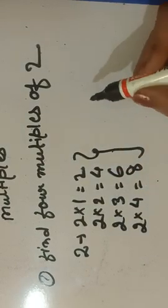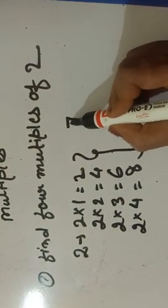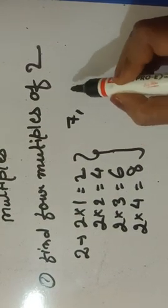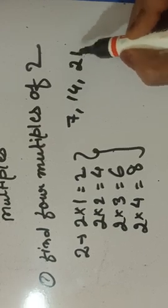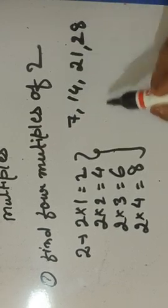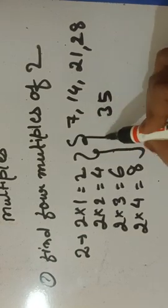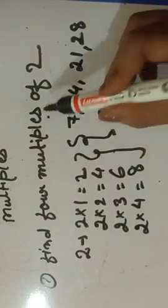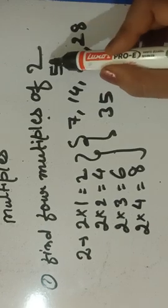So the same question: find out 5 multiples of 7. How can we write? Up to 5: 7, 14, 21, 28, 35 — up to the 5th place. So here are 5 multiples of 7.